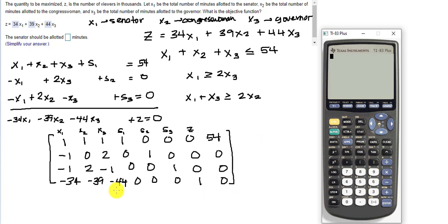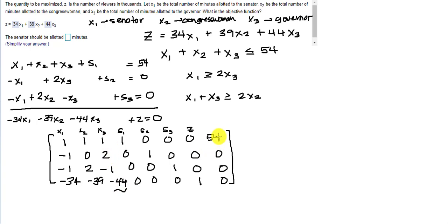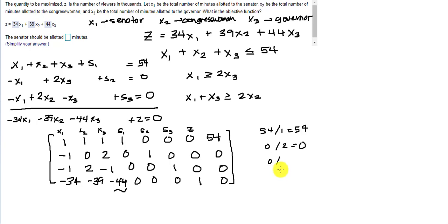Now we have to use our math steps. We go to the most negative indicator, which is negative 44. We go up into that column and divide each right-hand-side number by the corresponding entry in that column to find the smallest ratio. Row 1 gives 54 divided by 1 = 54. Row 2 gives 0 divided by 2 = 0. Row 3 gives 0 divided by negative 1 — we discard that since we divide by a negative. So the smallest is 0 in row 2, which becomes our pivot.